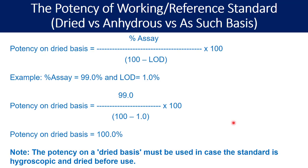A very important note: the potency on a dried basis must be used in case the standard is hygroscopic and dried before use. Because the standard is highly hygroscopic, over a period of storage it may absorb some amount of water. So you dry the substance, perhaps at 105 degrees Celsius, and then use it. In that case, you need to use the potency on dried basis.